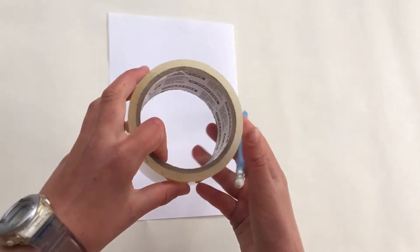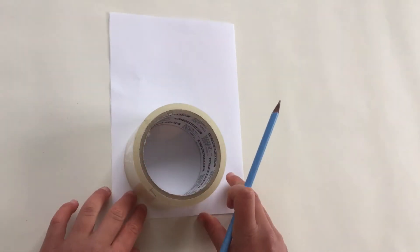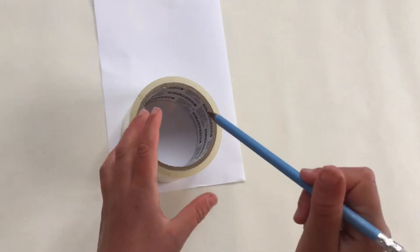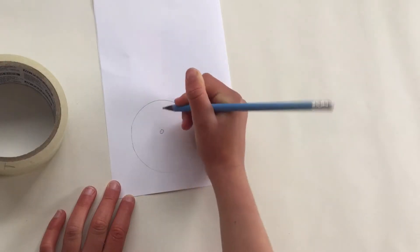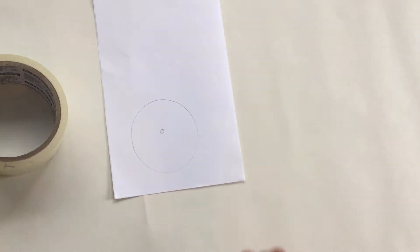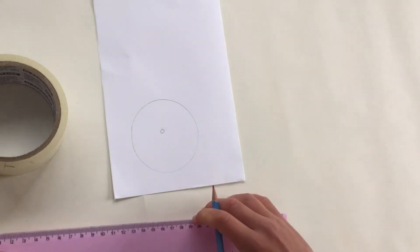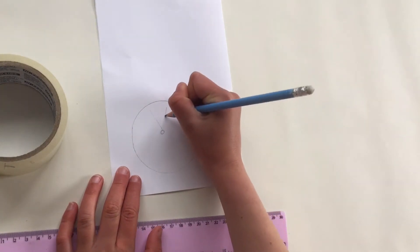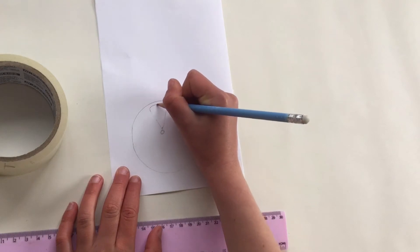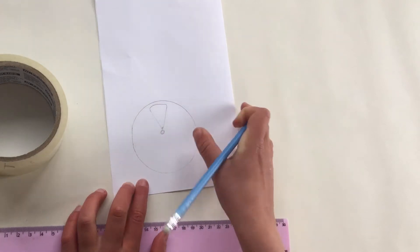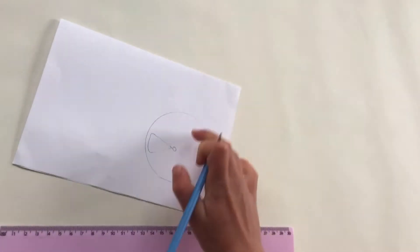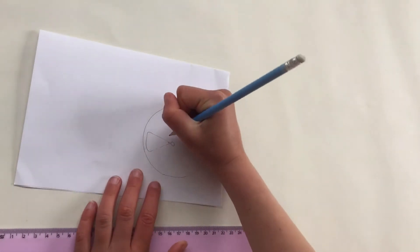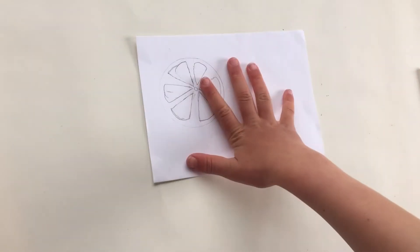First what you need to do is fold a piece of paper in half and then get a round circle, quite big, and draw a little circle in the middle and then draw petals around the outside.